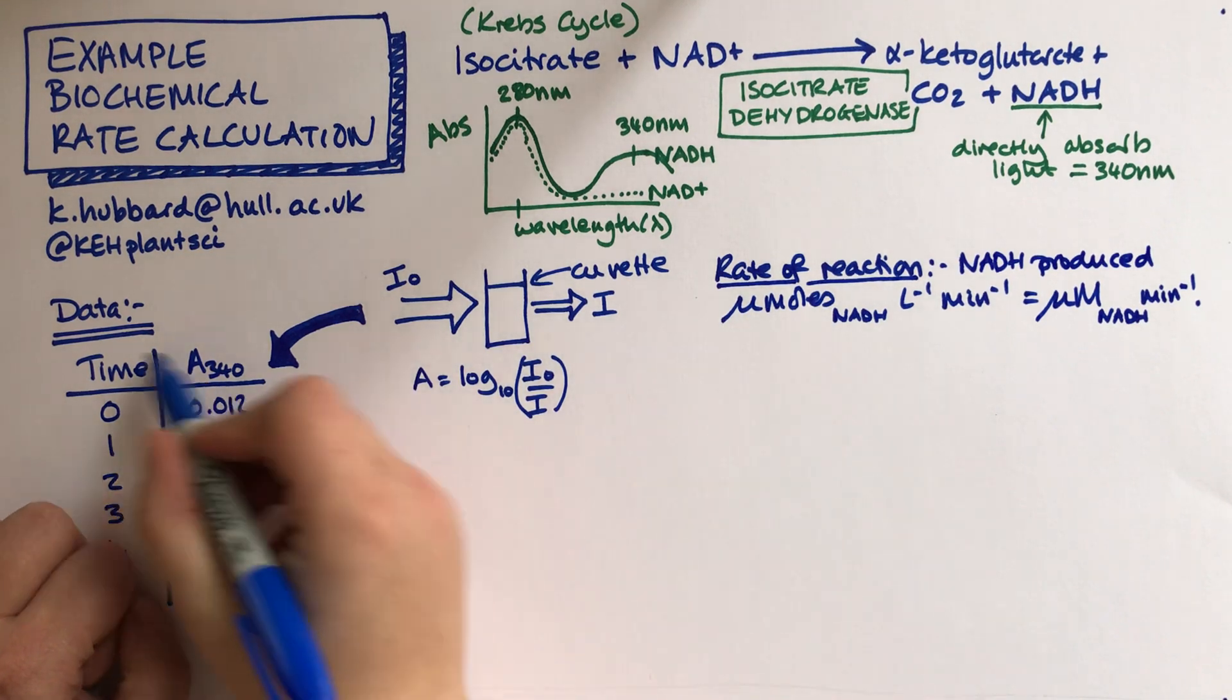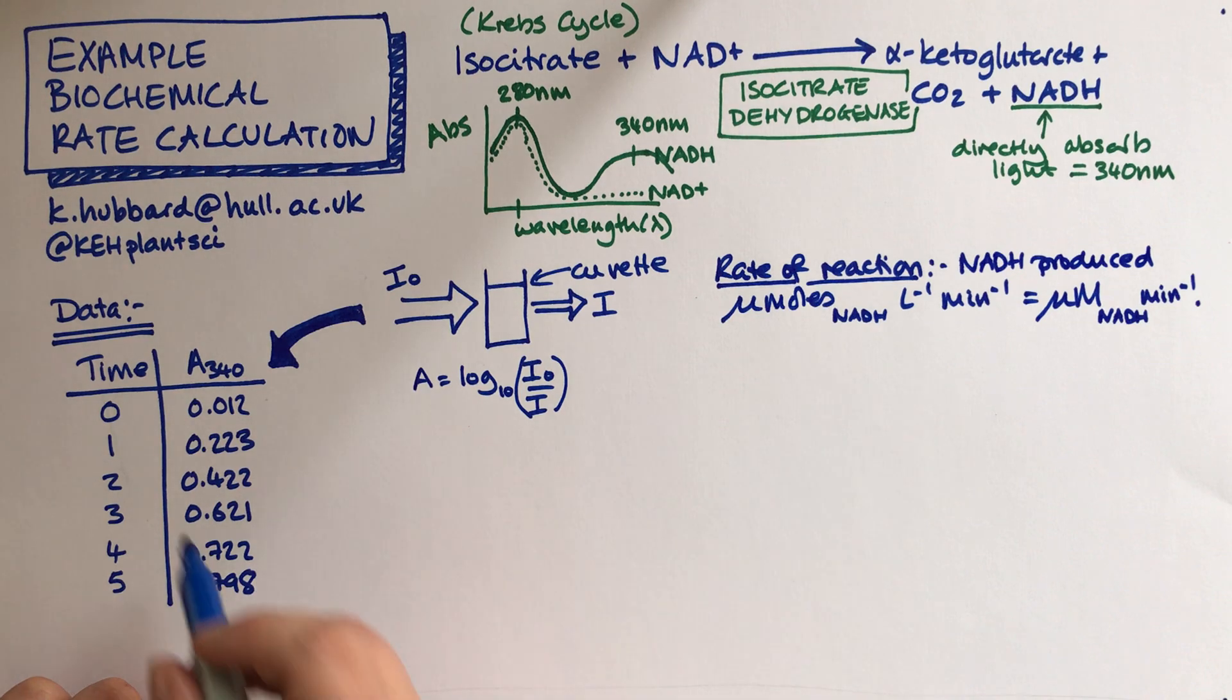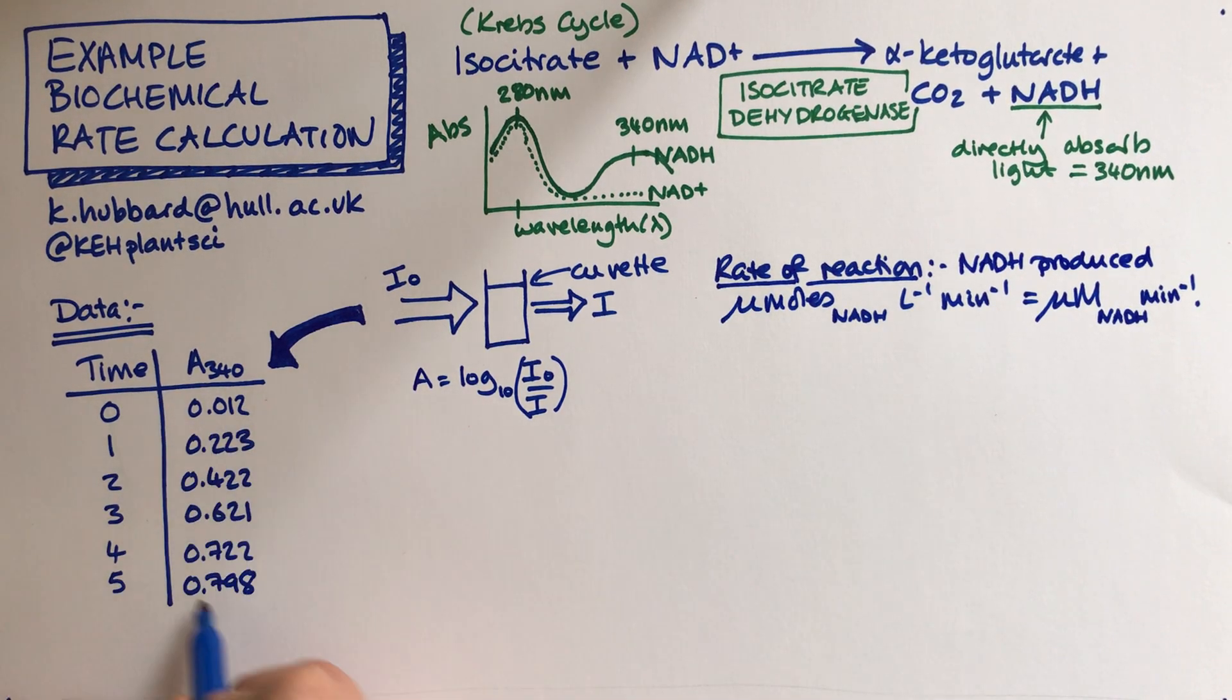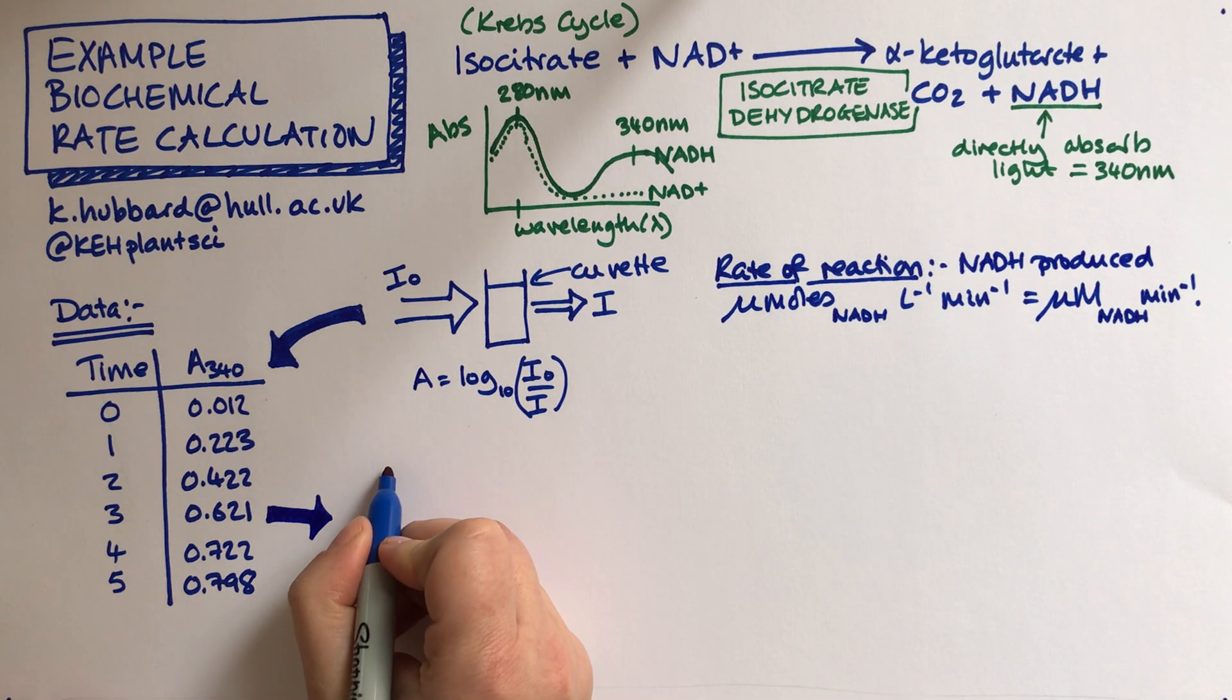So we need to use this data to find out this value here. This is a set of absorbances and one of the things you should do just before going into any maths is to just think about what's the overall profile of the reaction. What does that look like as a graph?